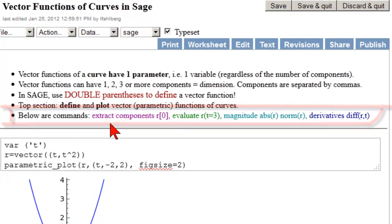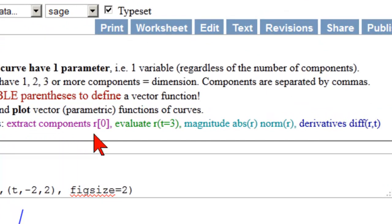We've looked at extracting components, where we used r bracket and then one number less than the number of components. So r bracket 0 gets out the first component, r bracket 1 the second component, etc.